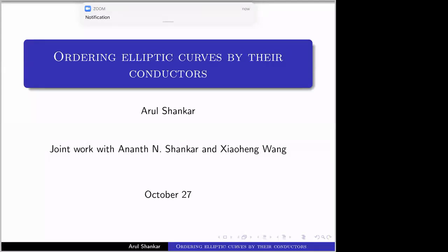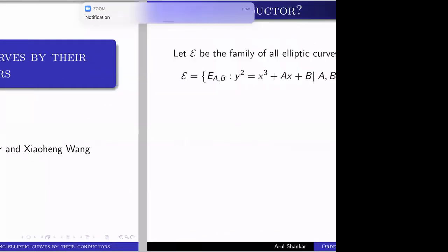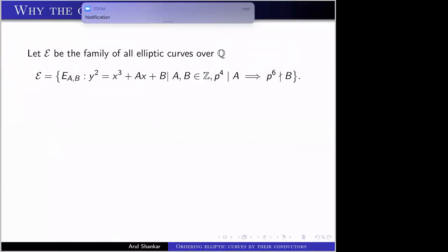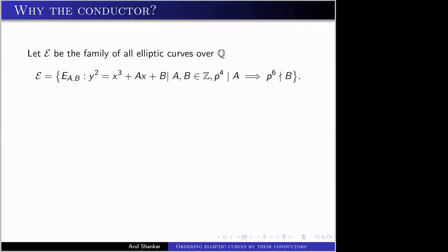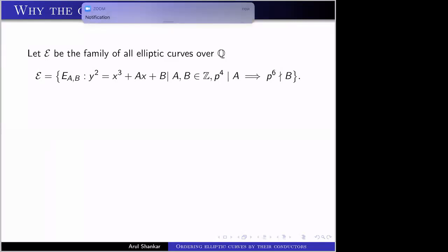It's a real pleasure to be talking. All the results I talk about are based on joint work with Anand Shankar and Xiao Heng Wang. So let's get started. As in the rest of the series, we're going to be working with the family of all elliptic curves, which I'll denote by script E. You can write all elliptic curves over Q as E_{A,B}: y² = x³ + Ax + B, where A and B are integers.